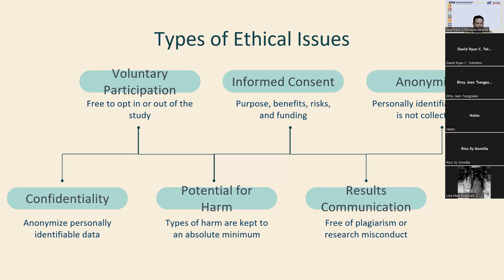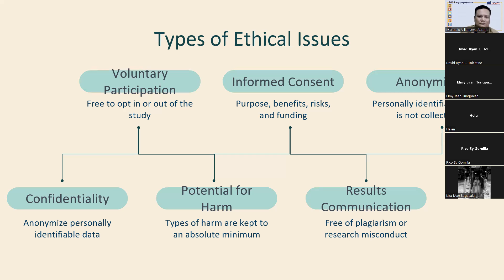The fifth type is the potential for harm. Physical, social, psychological, and all other types of harm must be kept to an absolute minimum. As a researcher, you have to consider all possible sources of harm: psychological harm (sensitive questions may trigger negative emotions like shame or anxiety), social harm (participation can involve social risk, public embarrassment, or stigma), physical harm (pain or injury from study procedures), and legal harm (reporting sensitive data could lead to legal risk or a breach of privacy). We must disclose all possible risks of harm to participants before the study to get informed consent.